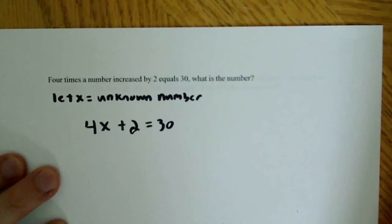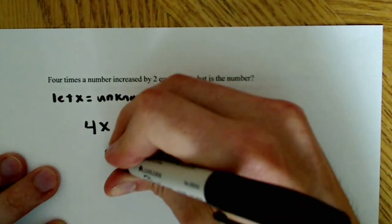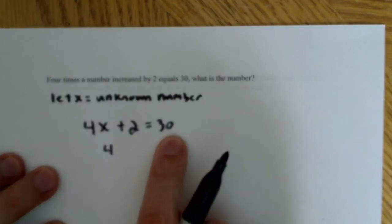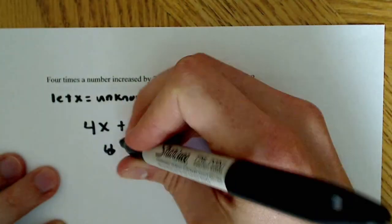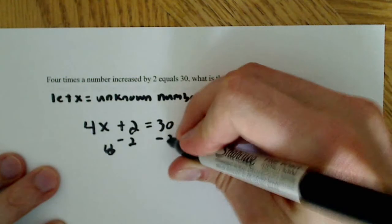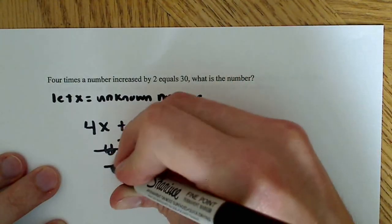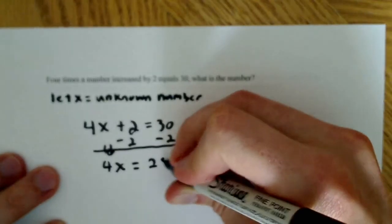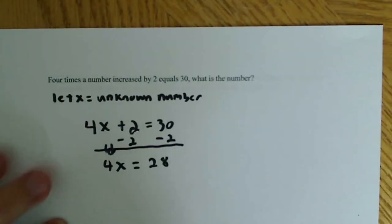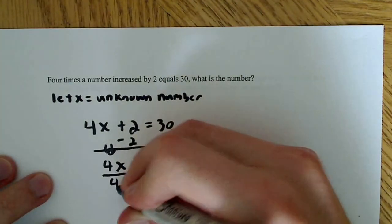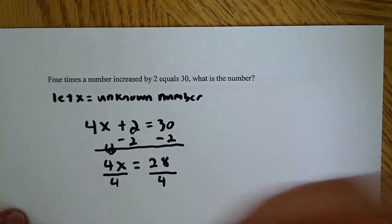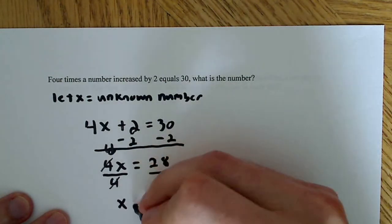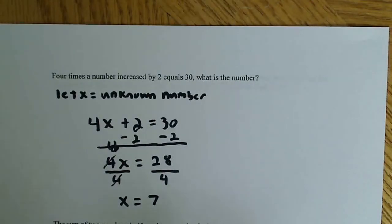So the next thing to do is to solve this equation. The first thing to do is to subtract 2 from both sides — subtract 2 from here and subtract 2 from here. What we wind up with is 4x is equal to 28. Now the next thing to do is divide both sides by 4. These 4s cancel, and 4 goes into 28, so x is equal to 7. That's the answer.